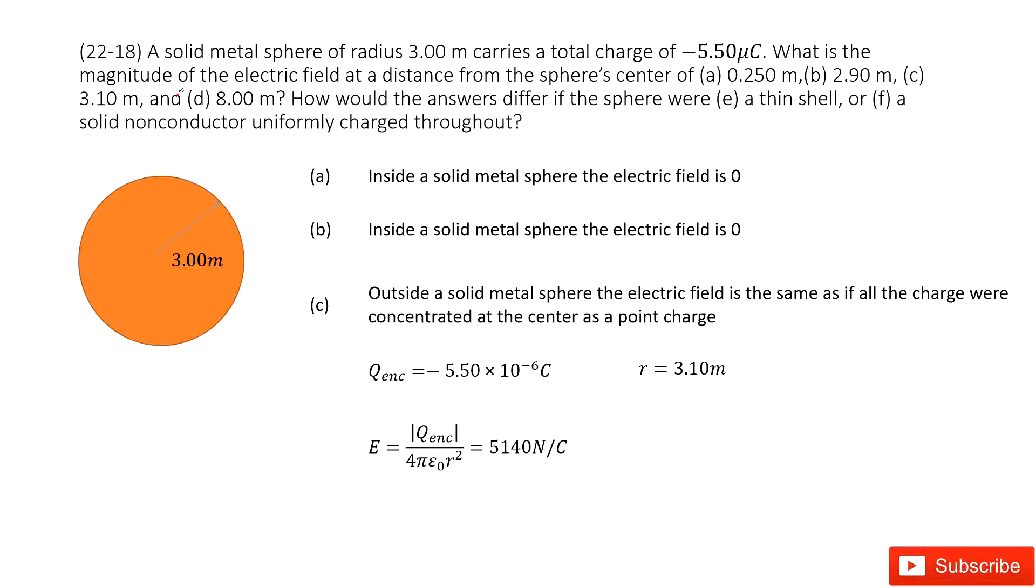Chapter 22 is about Gauss's law. For this problem, we look at this system. It tells us this is a solid metal spherical object. Keyword: metal. That means this object is a conductor. The radius is given as 3 meters, and the net charge is given as negative 5.5 microcoulombs.